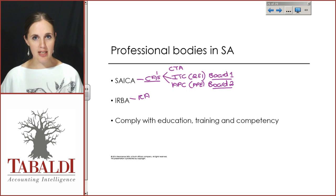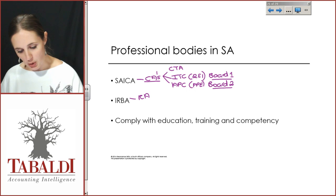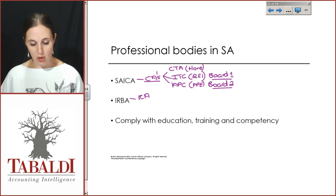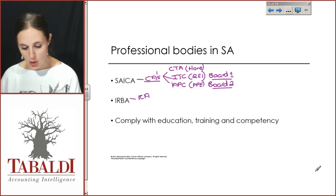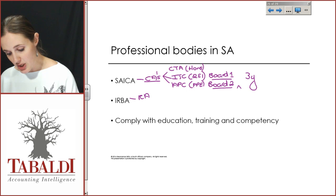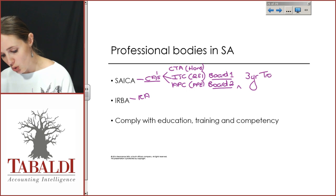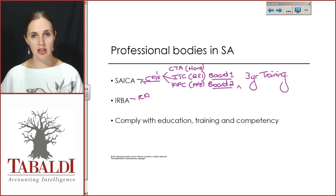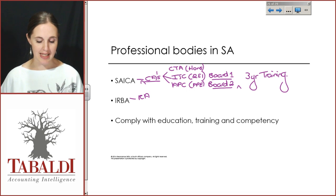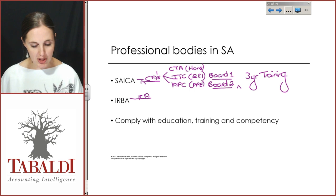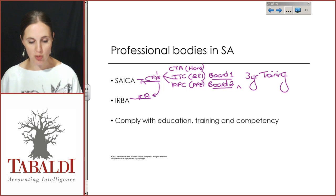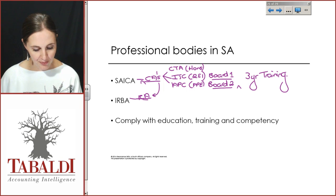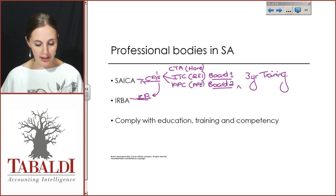To qualify as a CA, you need your CTA — the Certificate in the Theory of Accounting, done at honours level — your ITC, your APC, as well as a three-year training contract. Once those are signed off, SAICA will allow you to register as a CA. At that point, IRBA says SAICA's criteria are good enough for them.